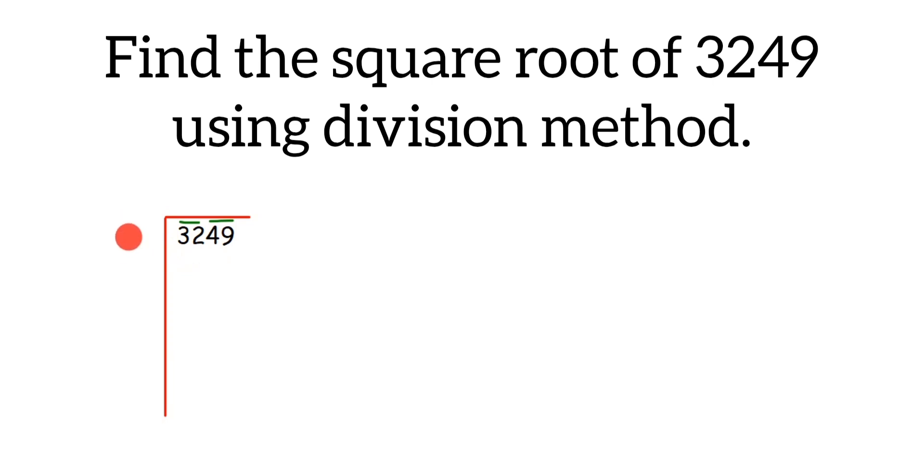So how to find the divisor? Here we have 32. We have to find a perfect square number which equals 32 or less than 32. 32 is not a perfect square number. We will find a number whose square is almost equal to 32 but not exactly. We know that 4² is 16, 5² is 25, 6² is 36.